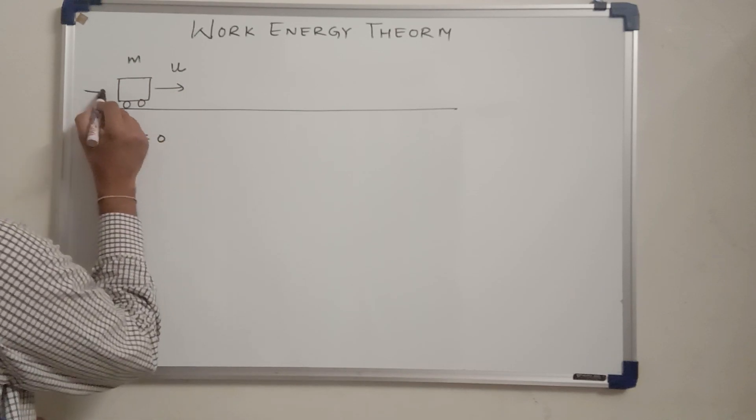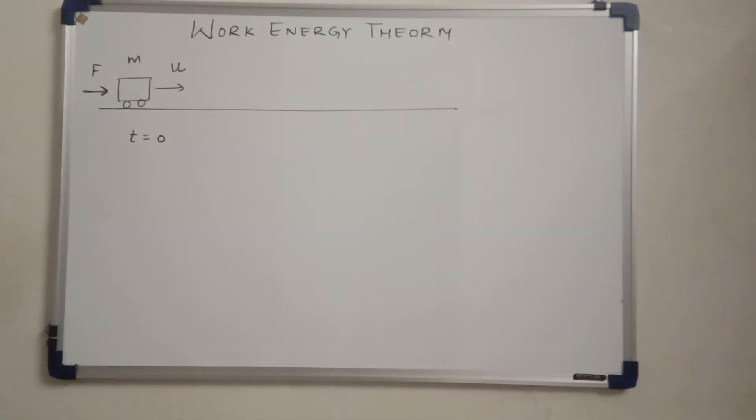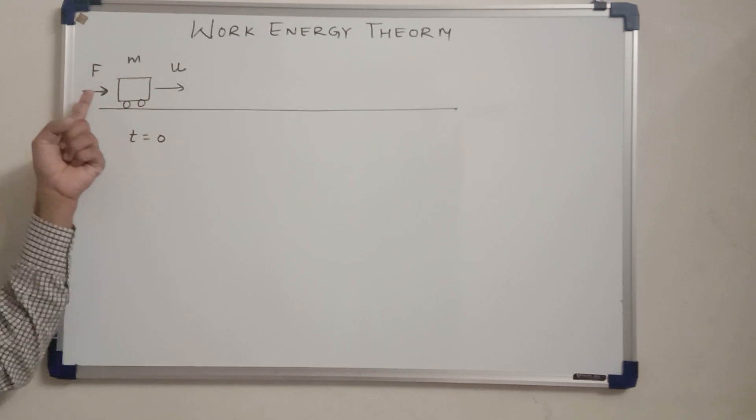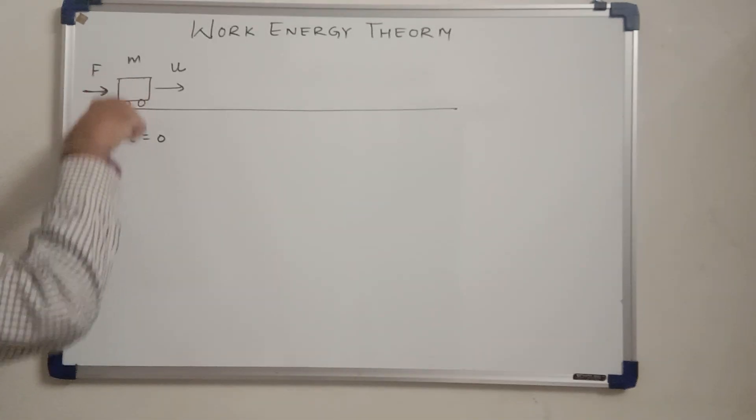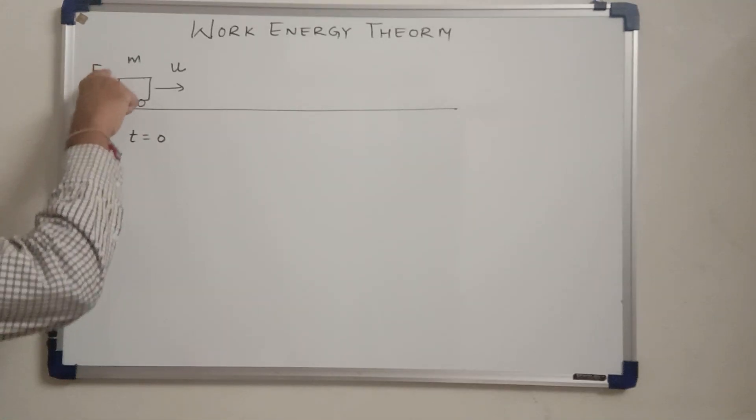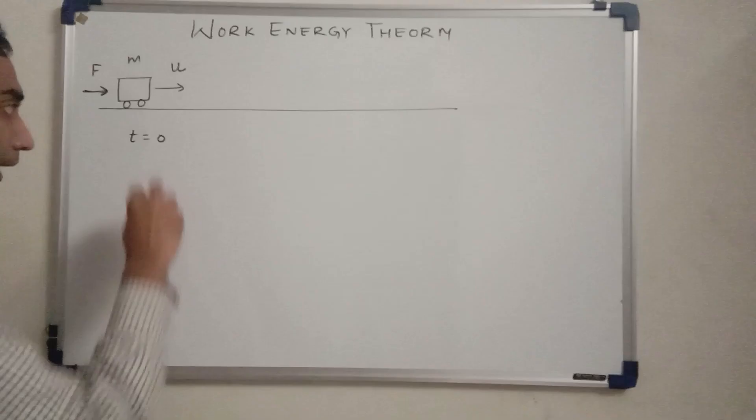Suppose at time t=0 we have started to exert force in the same direction as that of the velocity. So as a result of this force, since this is the only one force acting in the horizontal direction, of course there is a weight in the vertical direction, we have not considered friction.